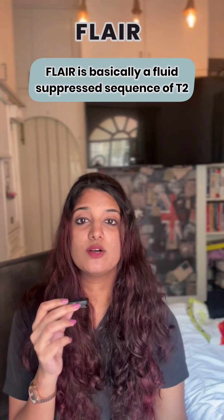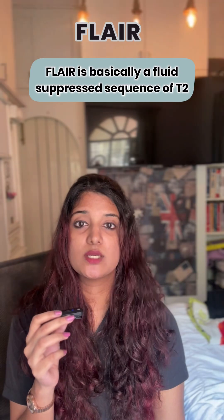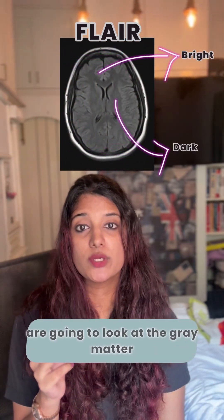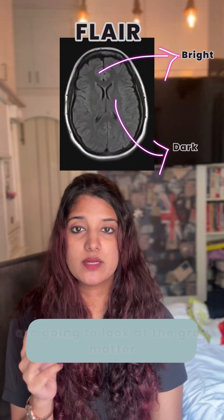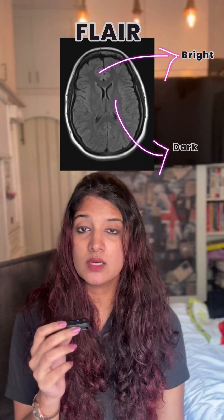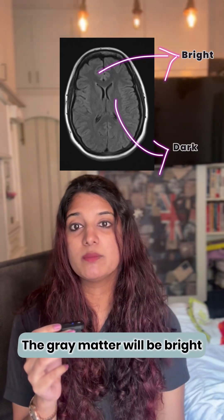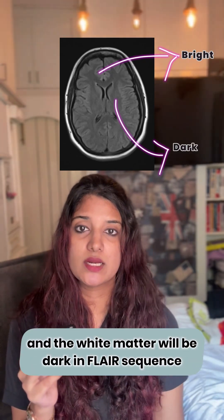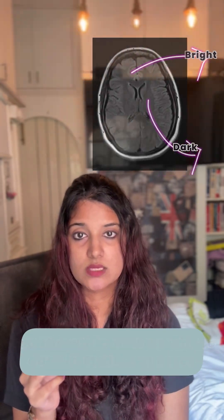FLAIR is basically a fluid-suppressed sequence of T2. In order to differentiate it from T1, you are going to look at the gray matter and the white matter. The gray matter will be bright and the white matter will be dark in the FLAIR sequence.